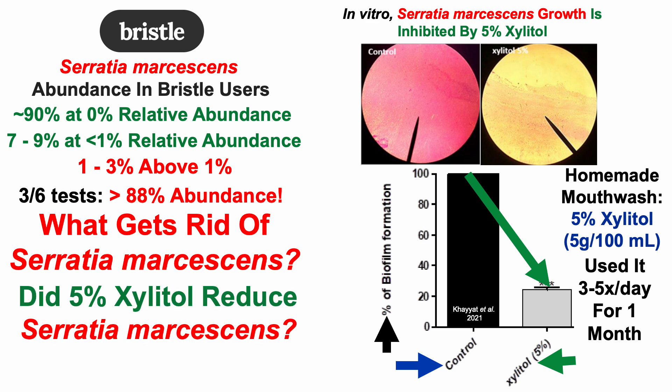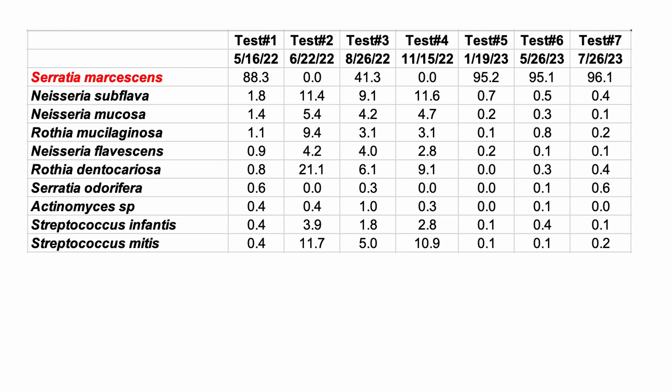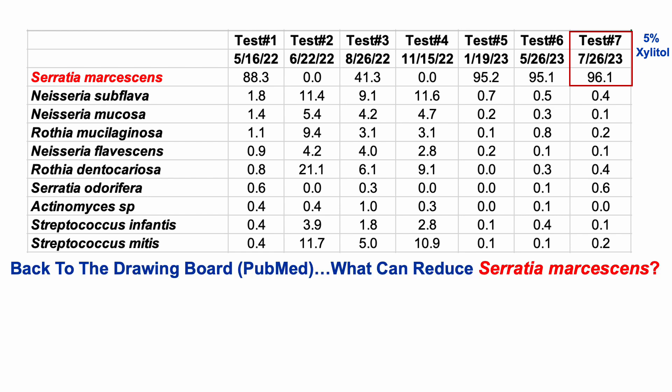So did 5% xylitol reduce levels of Serratia? I wish I could say it did, but unfortunately it did not. For test number seven, in July of 2023, using 5% xylitol many times throughout the day for 30 days, Serratia was at my highest level to date at 96% of all bacteria — only 4% non-Serratia. So this sent me back to the drawing board — PubMed — for what can potentially reduce Serratia marcescens.